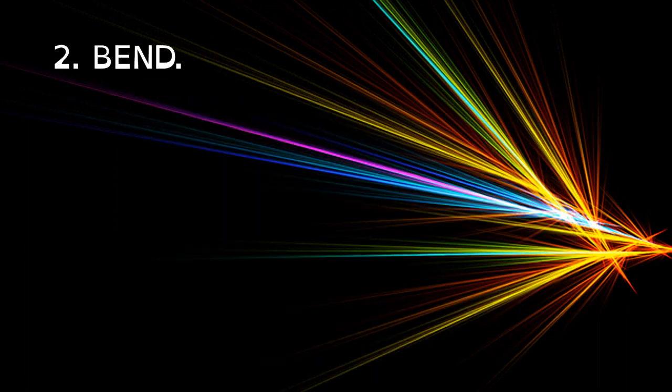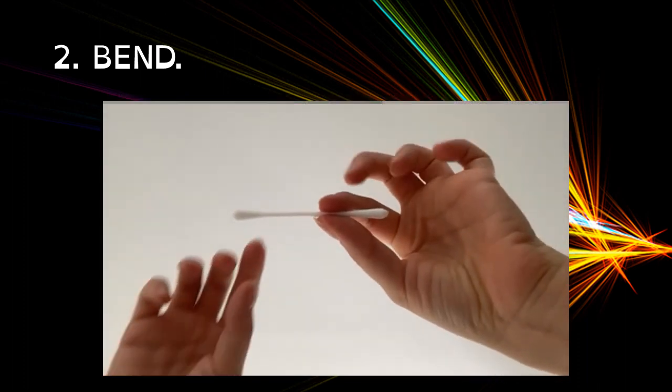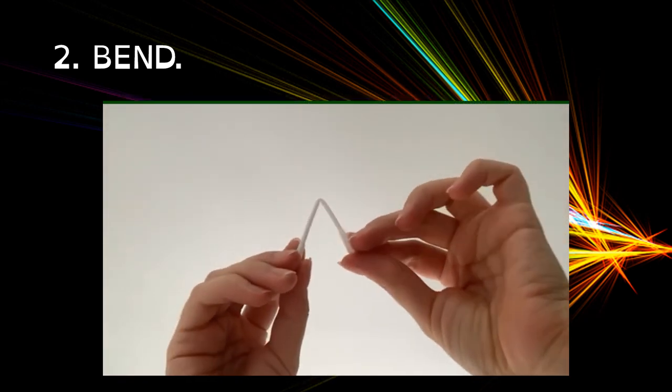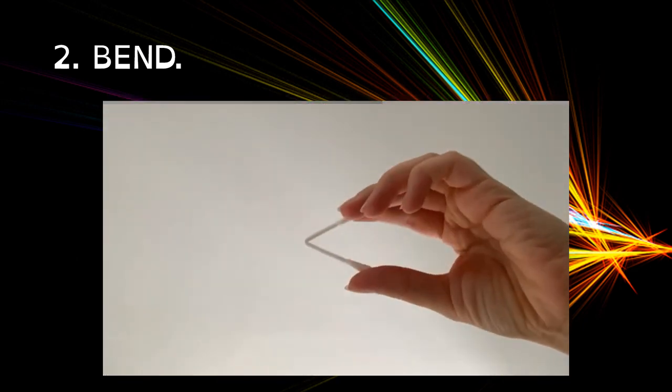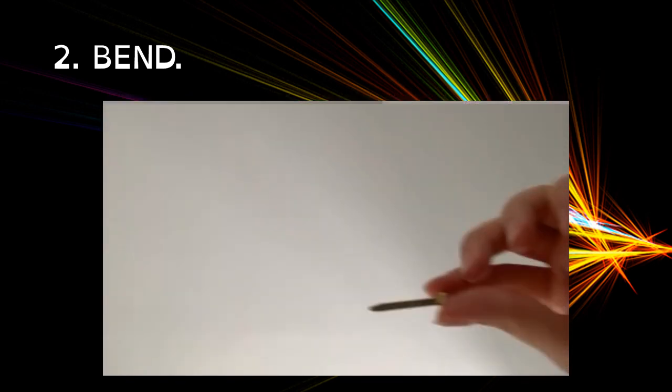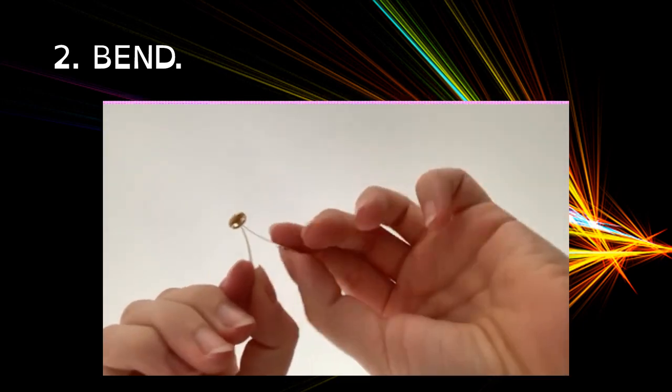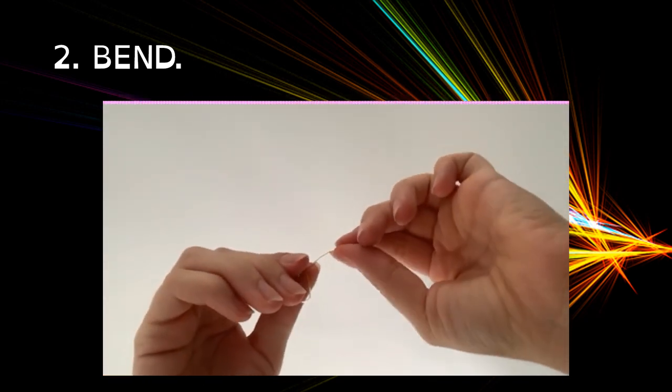As well, we can bend some materials and change their shape. We can bend some things like for example, a cotton swab like this, or like for example, a book binder. Like this. You can bend it in the way that you want.